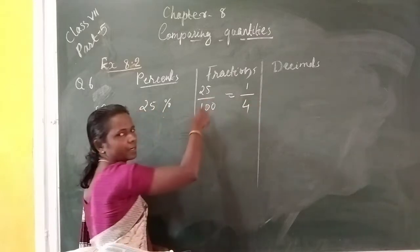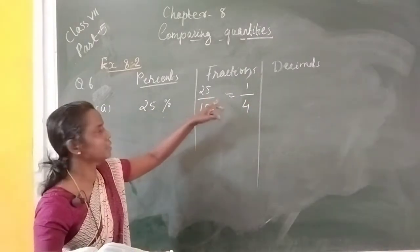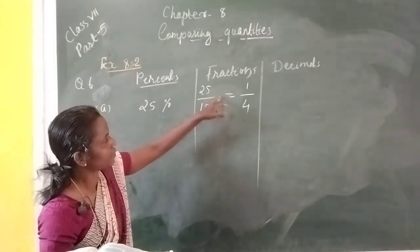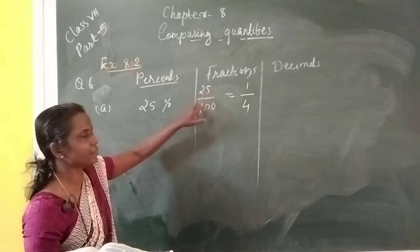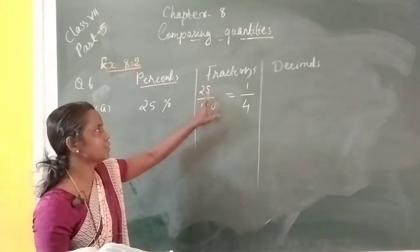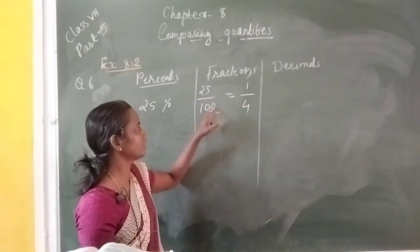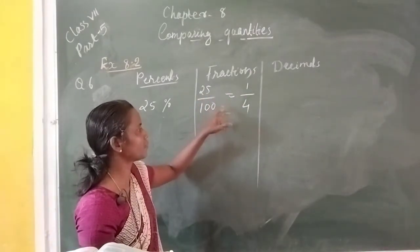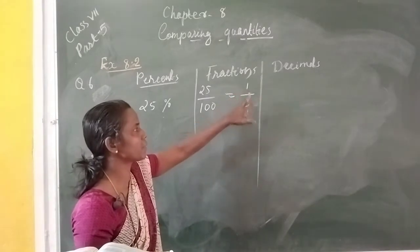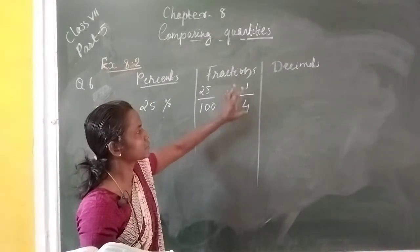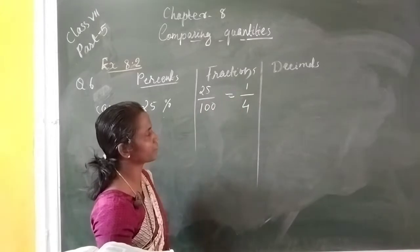Here, numerator and denominator are divided by the highest common factor. The highest common factor is 25. So 25 divided by 25 is 1, and 100 divided by 25 is 4. So the simplest form is 1 by 4. This number cannot be divided again by any other number.